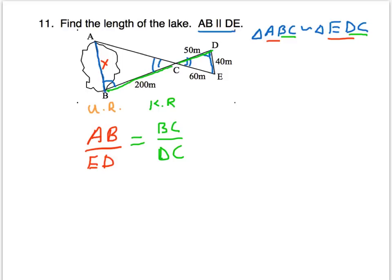Let's substitute the values of those lengths. AB is unknown, let's call it x. ED is known, it's 40 meters. And that equals BC, which is 200 meters, divided by 50 meters.